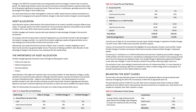The importance of asset allocation: portfolio managers generate investment returns through the following four means — choice of an asset mix, market timing decisions, security selection, and chance. Asset allocation is the single most important step in structuring a portfolio. An asset allocation strategy is usually specified in the investment policy statement. Although investment advisors may have the freedom to recommend an array of individual securities, the overall proportion of a client's portfolio invested in cash, debt securities, and equity securities may be fixed.